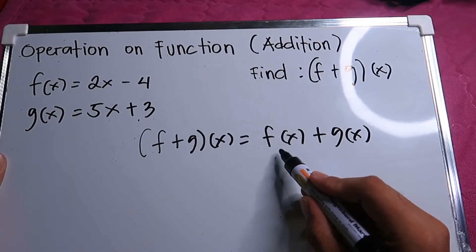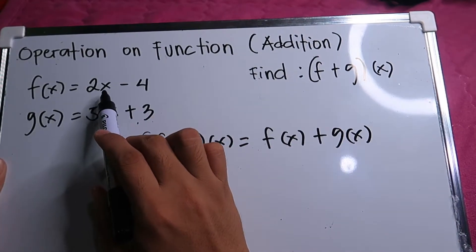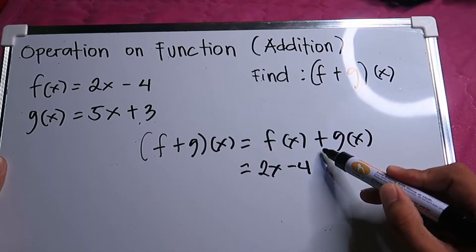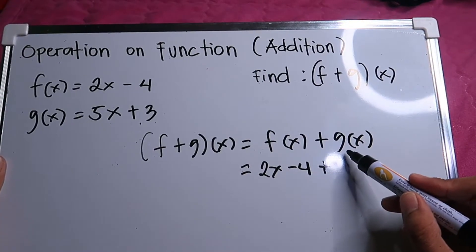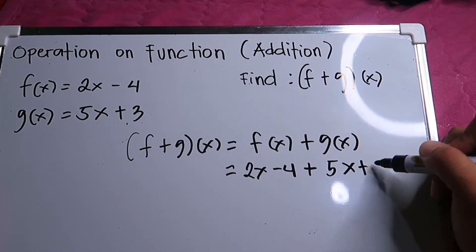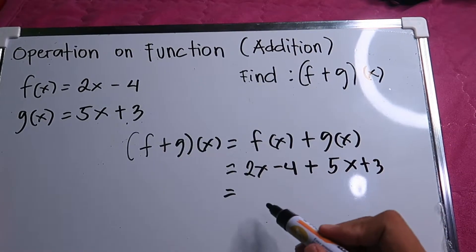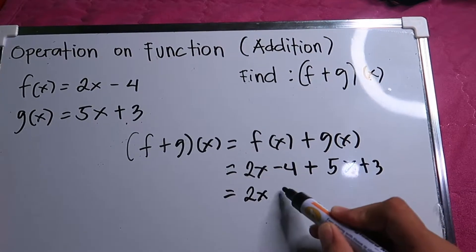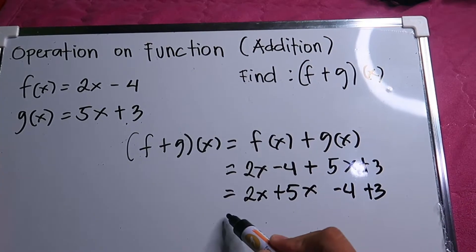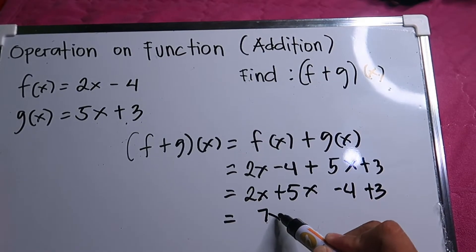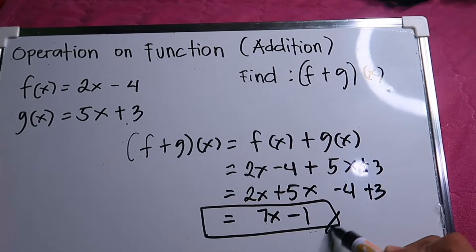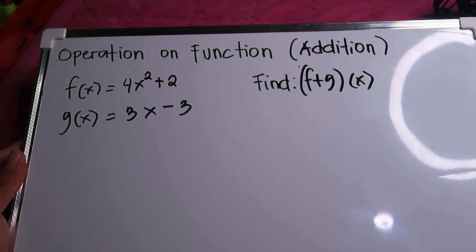We know from the given that f(x) is 2x minus 4, so we place that here: 2x minus 4. Don't forget the plus sign. The function g(x) is 5x plus 3, so we place that here: 5x plus 3. Now combine like terms: 2x plus 5x is 7x, and negative 4 plus 3 is negative 1. So the answer is 7x minus 1.